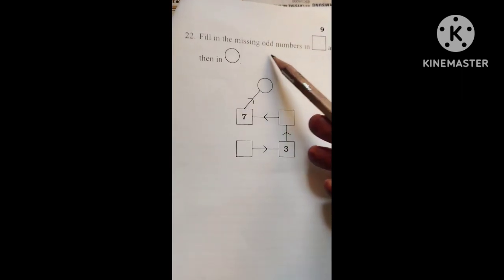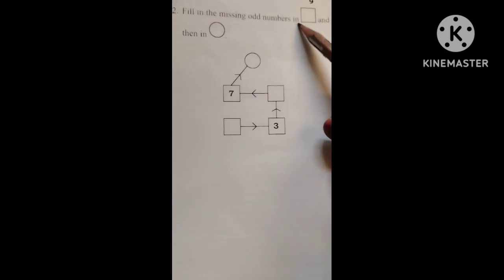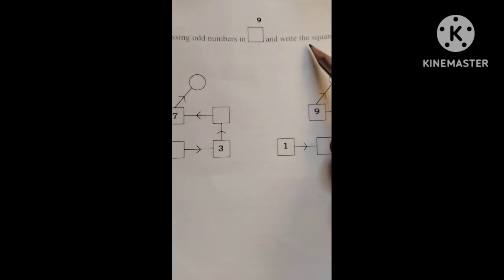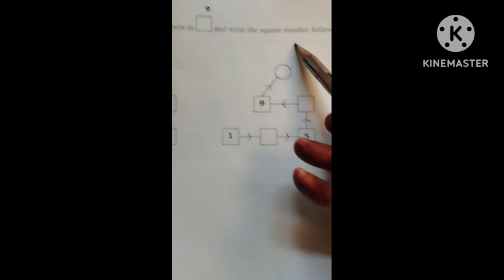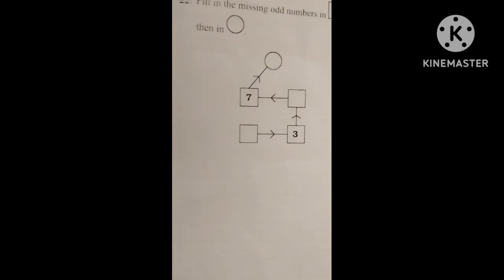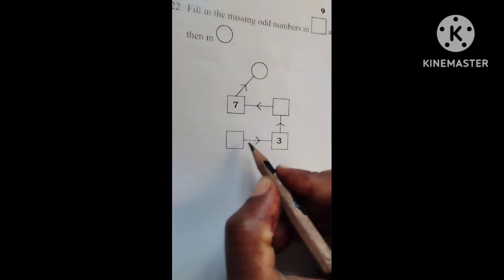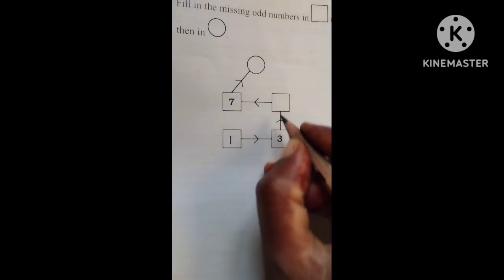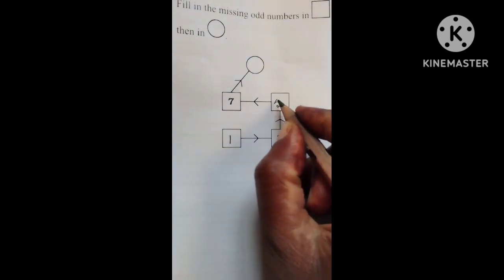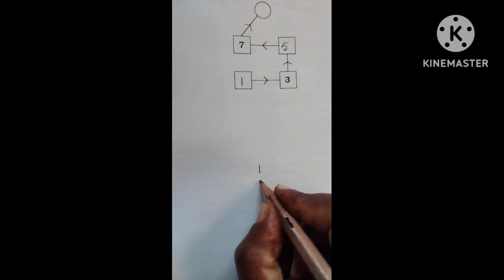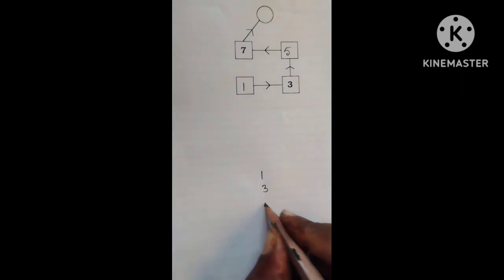Fill in the missing odd numbers in box, I mean square, and write the square numbers followed by in the circle. See, you want to write first box odd numbers. 1, 3 already given, 5.